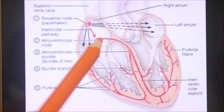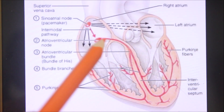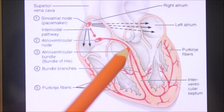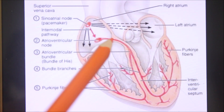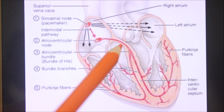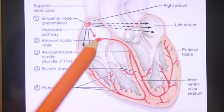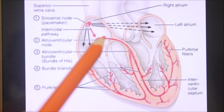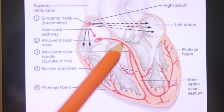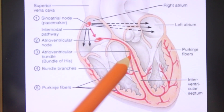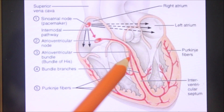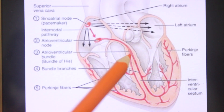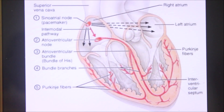Next, the atrioventricular bundle or bundle of His. It is the only muscular connection between the atrial and ventricular musculature. It begins at the AV node and descends along the posteroinferior border of the ventricular septum. At the upper border of the muscular part of the ventricular septum, it divides into right and left branches.